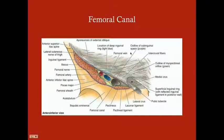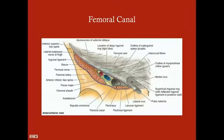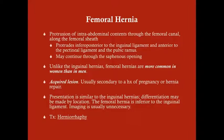The problem with femoral hernias is when you get a protrusion through the femoral canal, it progresses down the femoral sheath, which covers your vessels and lymphatics. This protrudes inferoposterior to the inguinal ligament and anterior to the pectineal ligament and the pubic ramus. It can also continue through the saphenous opening, where the femoral vessel gives rise to the saphenous vessel and there's an interruption of the femoral sheath.